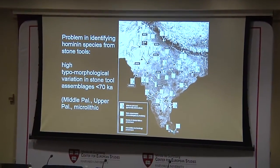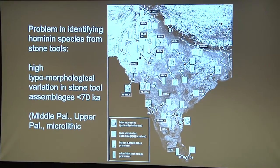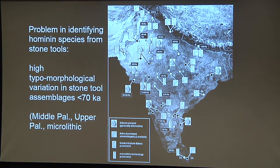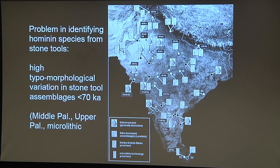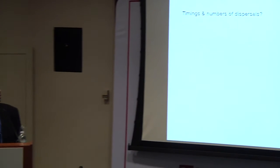Linking middle Pleistocene stone tools with modern humans is problematic: after 100,000 years ago, especially around 45,000 years ago, we have middle Paleolithic, upper Paleolithic, and microlithic technologies all existing simultaneously. Which species made which tools is not clear. It's not always reliable to link a specific technology with a specific species, as we know from the Neanderthal and modern human debate. We don't know the timings and numbers of dispersals — whether modern humans first arrived with middle Paleolithic, or with microliths, or in multiple dispersals with different technologies.